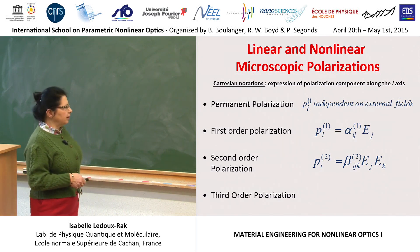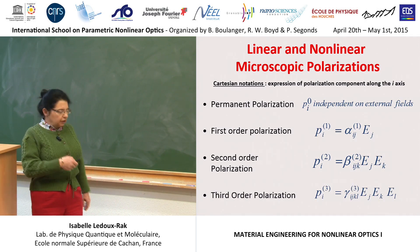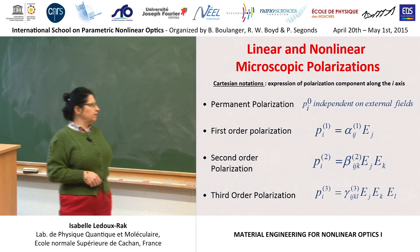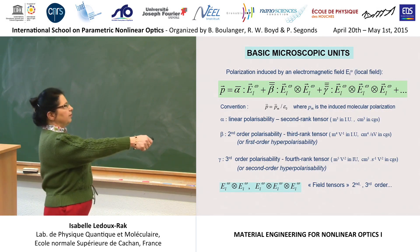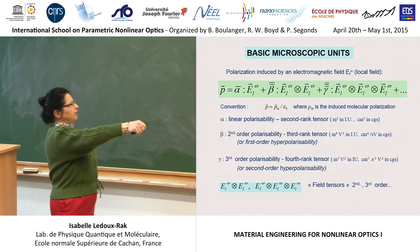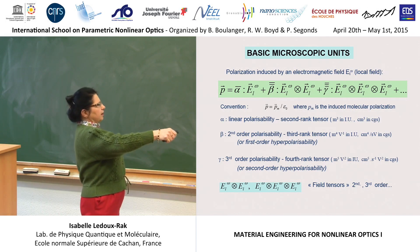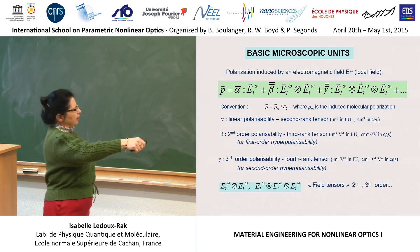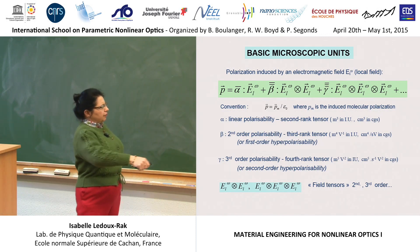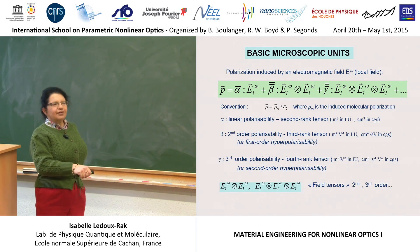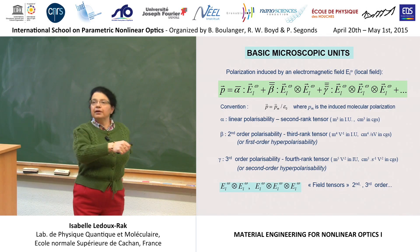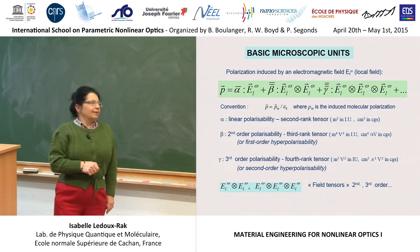Third-order polarization is for your information: the induced polarization is proportional to the third power of the electric field through a fourth-rank tensor gamma. The total induced polarization is expressed as the sum of all these terms — the nonlinear response starts at second order. Alpha, beta, gamma are tensors of increasing rank, and this is a tensorial product of the electric field applied to the molecule — the so-called field tensors. I guess that Benoît Boulanger has spoken a lot about this during the first week.